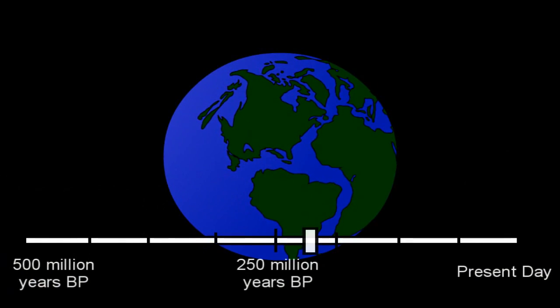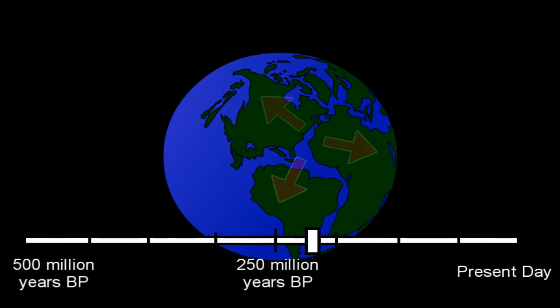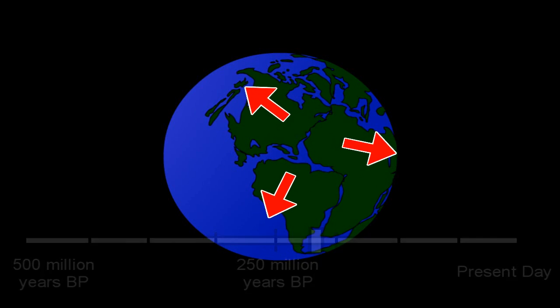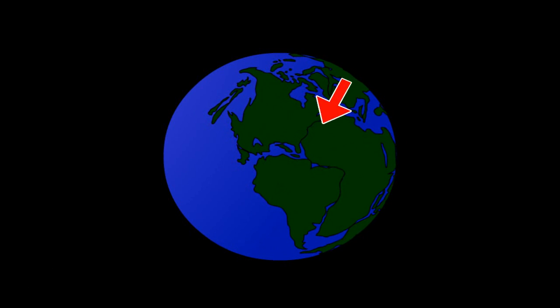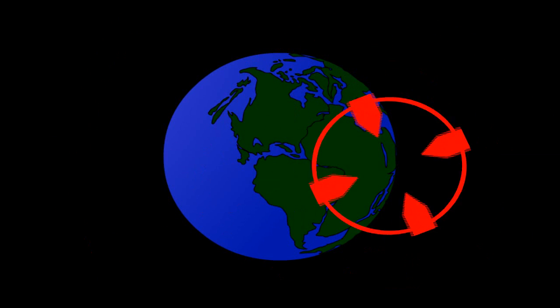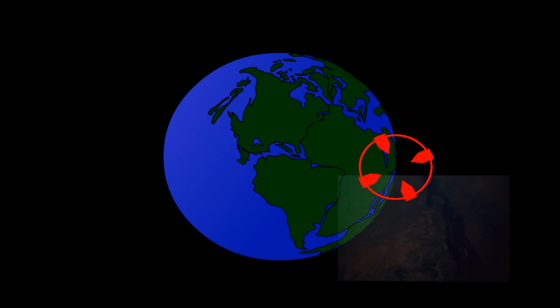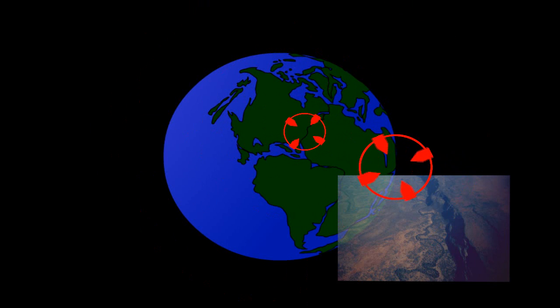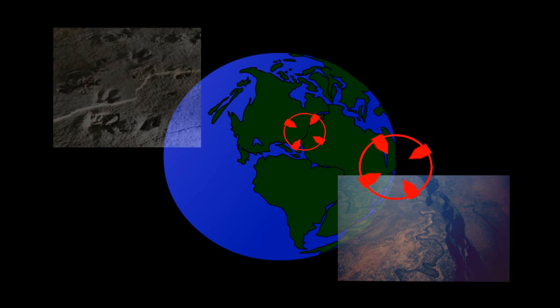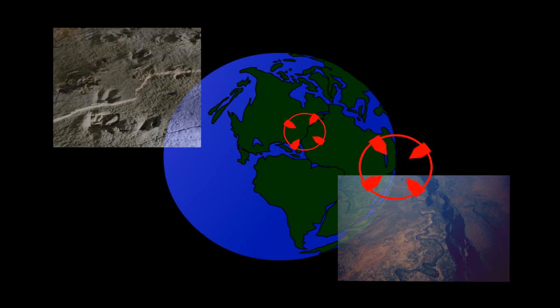About 200 million years ago, there was a reversal of plate-spreading directions, which caused the supercontinent of Pangaea to rift apart, and the present Atlantic Ocean began to open. The rifting created valleys like the African rift valleys of today, and dinosaurs left their footprints in the mud along lake shores in present-day Connecticut and Massachusetts.